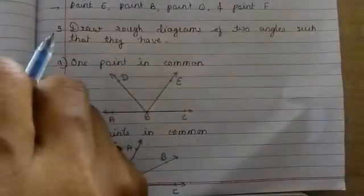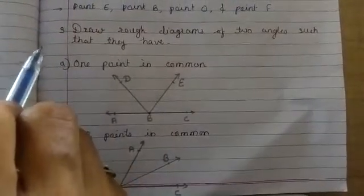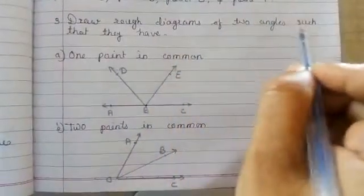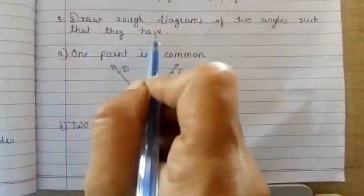Let's start third question from exercise 4.3. Draw rough diagrams of two angles such that they have.